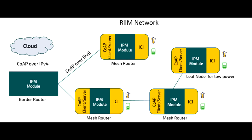The RIM network includes three node types: the border router, the mesh router, and the leaf node. The border router is the root of the network and connects the RIM network to the outside world. The mesh router is the full-featured node that can forward data to and from its parent nodes to its child nodes, and it also collects and forwards data to local sensors and actuators. The mesh router is the node that creates the mesh.